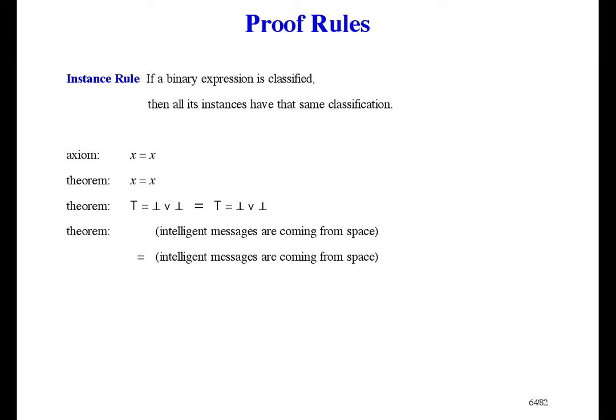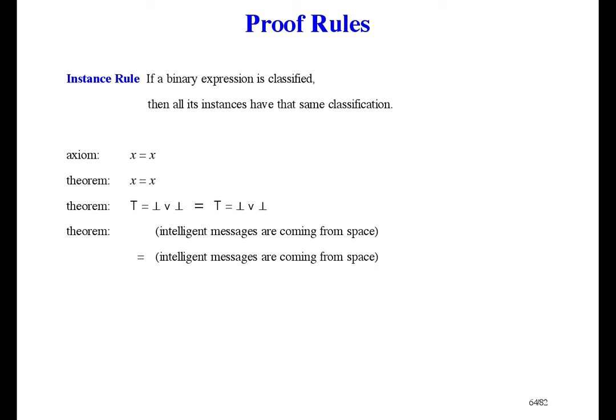That's all the rules. In this course, we can use all five rules, and that's called classical logic. In a logic course, it's interesting to see what you can do if you don't allow the completion rule — that's called constructive logic. And if you don't allow the consistency rule and the completion rule, it's called evaluation logic. But we can use all five rules.